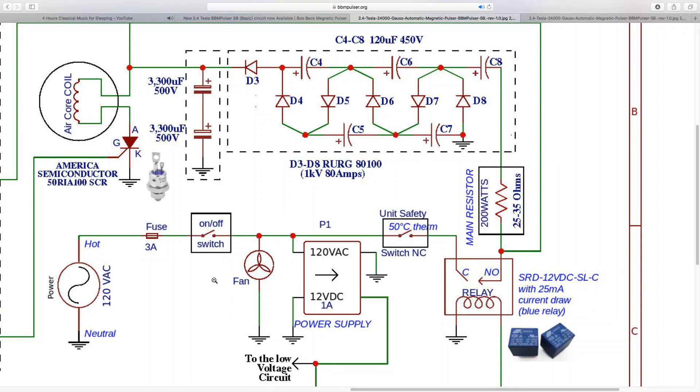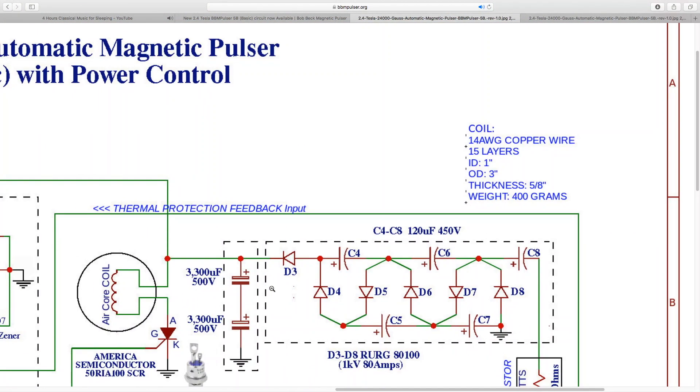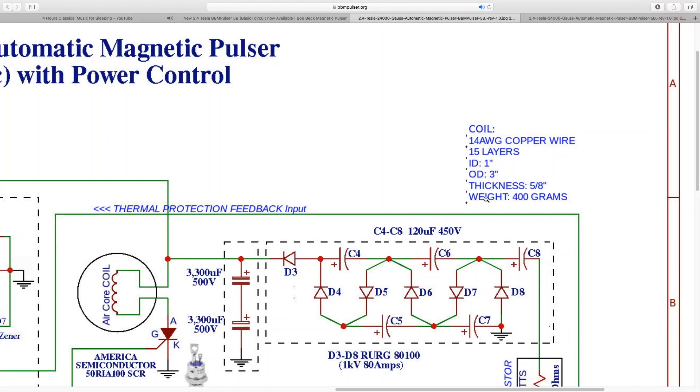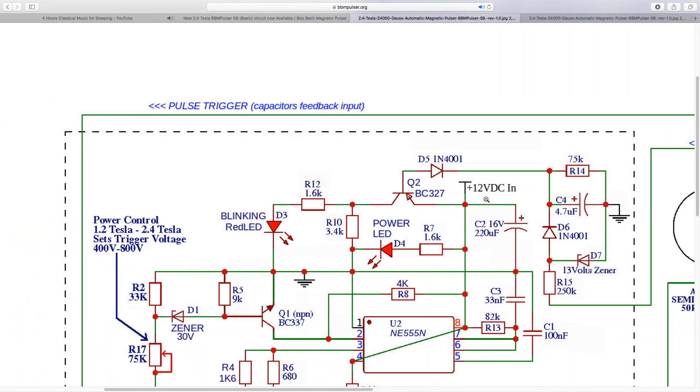About coil: coil is same as in previous pulser. It's made out of 14 gauge copper wire, has 15 layers, internal diameter is one inch, outside diameter is three inches, thickness 5.8, total weight of the coil is 400 grams. I do have videos where I mold the coil and I will be making videos on how to twist the coil and build the coil itself, so just keep watching my YouTube videos.